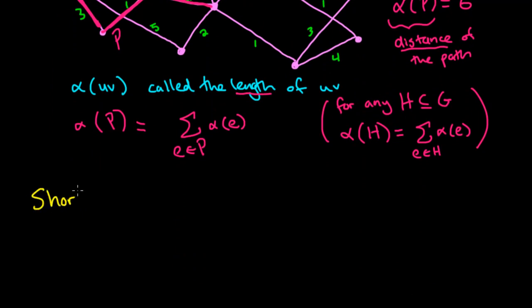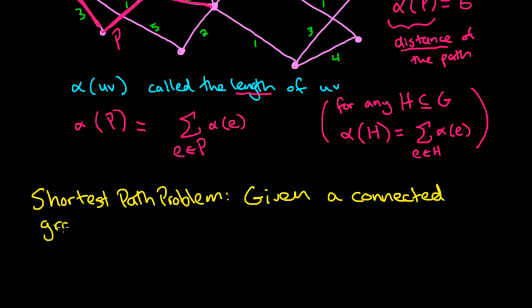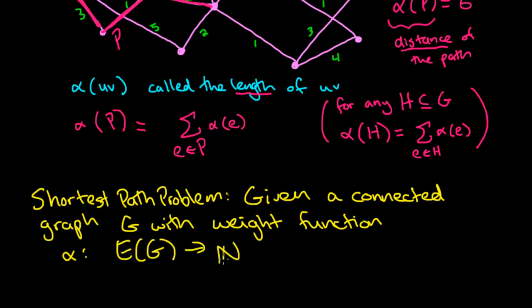And normally we actually talk about the shortest path problem on a connected graph with a weight function. So here we have shortest path problem, and we say it is given a connected graph G, so connected graph G with weight function alpha. So alpha, remember that takes the edge set of the graph, and it maps it to the natural numbers. So given this,